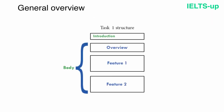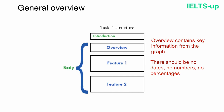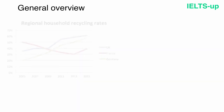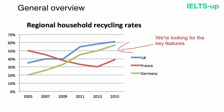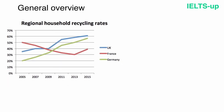Now let's move on to the overview. An overview is a paragraph containing all the key information from the graph — when writing it, you should not state any specific details. No dates, no numbers, no percentages — just general trends. Looking at our graph, the UK and Germany's rates went up while France's rates went down. Those are our two key features — you should normally have from two to four key features in your overview.